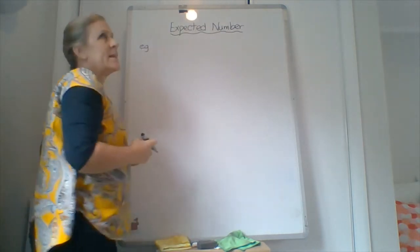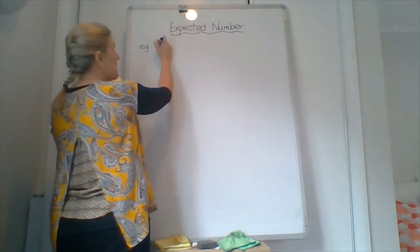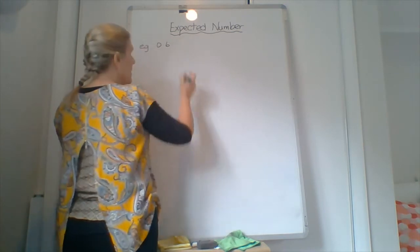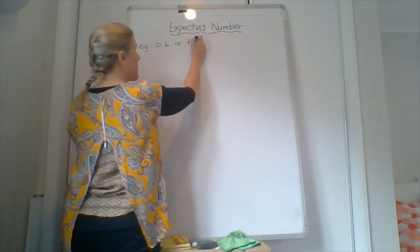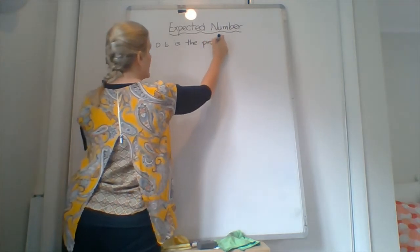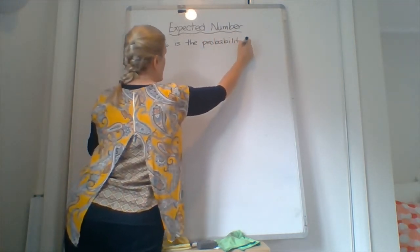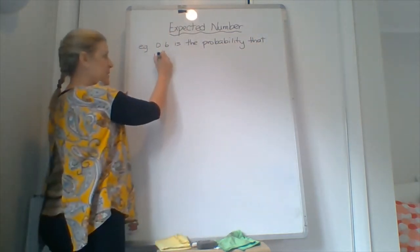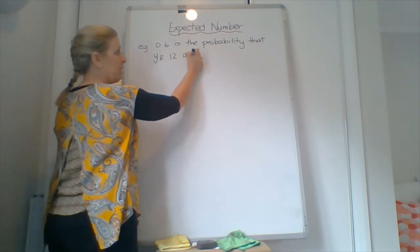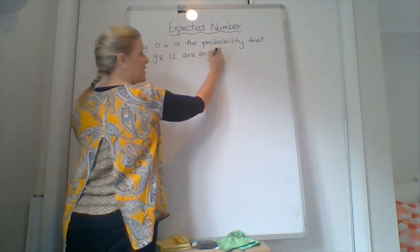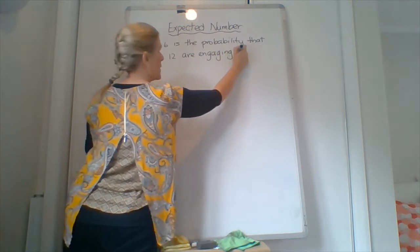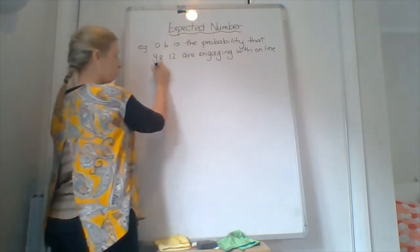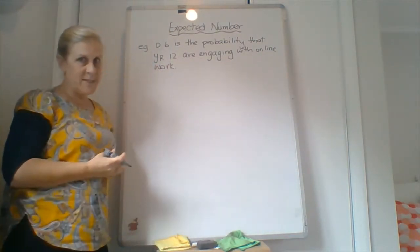Let's say that we've got 0.6. 0.6 is the probability that year 12s are engaging with online work.